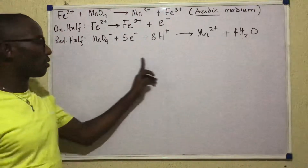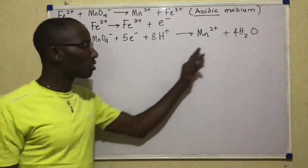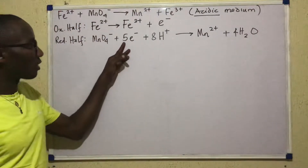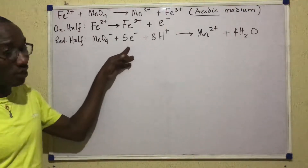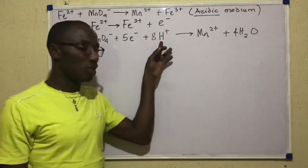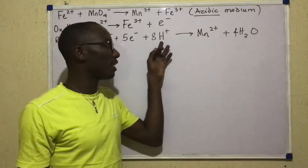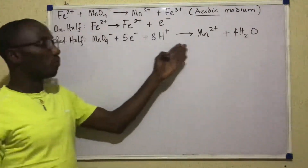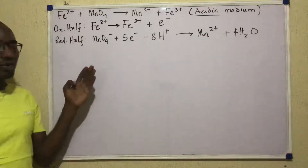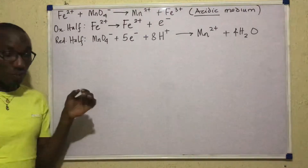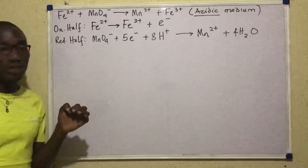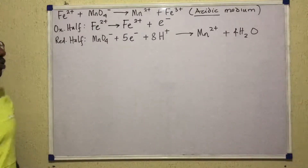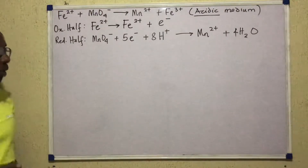Now I check atoms again. One manganese, one manganese. Four oxygens, four oxygens. Electrons are not counted — they are not atoms. For hydrogen: 8 hydrogen atoms on the left, 8 hydrogen atoms in the 4H2O on the right. So manganese, oxygen, and hydrogen atoms are all balanced. The next thing to check is charge — total charge on the left should equal total charge on the right.